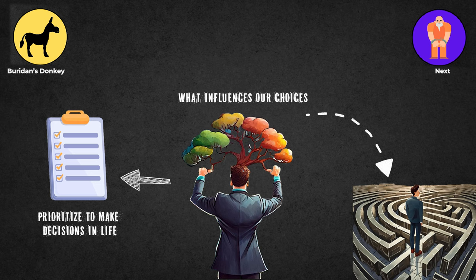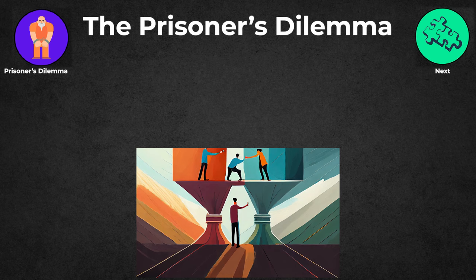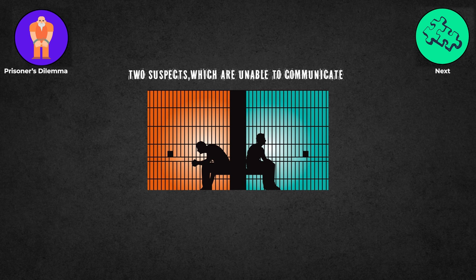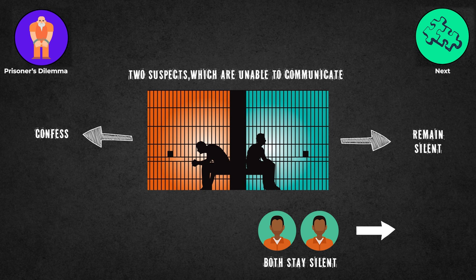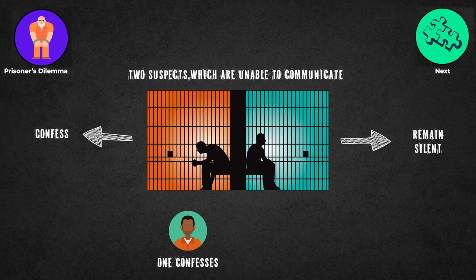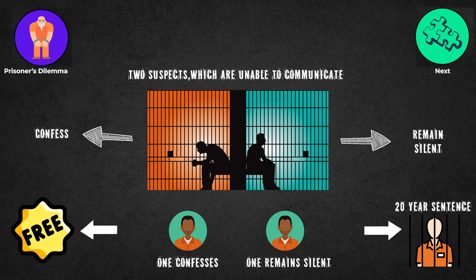The Prisoner's Dilemma: This well-known concept from economic game theory examines finding a balance between self-interest and working together with others. The dilemma presents two suspects, unable to communicate, facing separate decisions to either confess or remain silent. If both stay silent, they get one year in prison. If both confess, they receive a harsh penalty of five years. However, if one confesses and the other remains silent, the confessor goes free while the silent one faces a severe 20-year sentence.